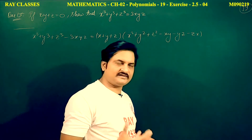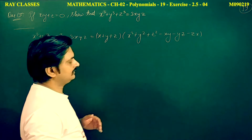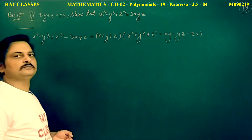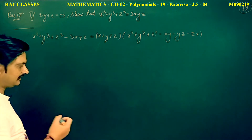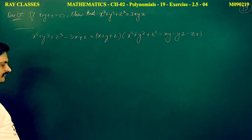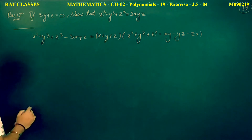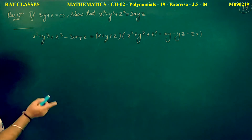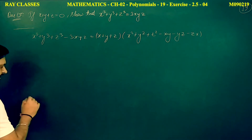Now what do we need to do? We have to prove this formula. You can write it — it is the value of question number 12, it was the value of this formula.